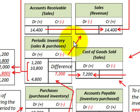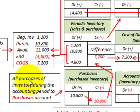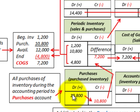Next, we have to determine the inventory costs for the sales made. With the periodic inventory method, we use a purchases account. All purchases of inventory during the accounting period are recorded in this purchases account. In this case, we would have debited our purchases account for $10,800 — the amount of purchases made during the period.